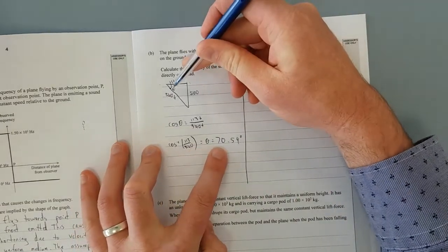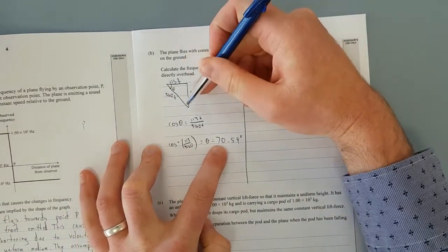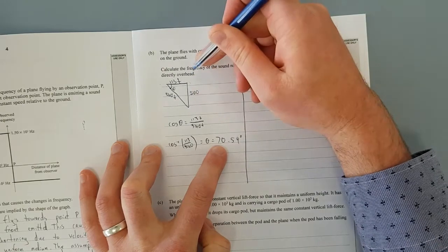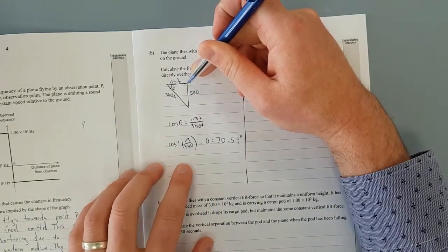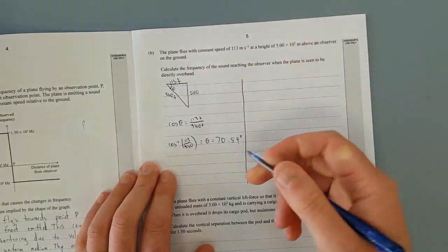So at 70.59 degrees, that's when you'll hear the sound when the plane is directly above, like straight above you. Now we need to figure out what that component of velocity is towards you.